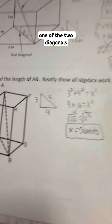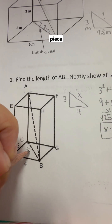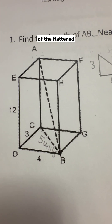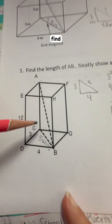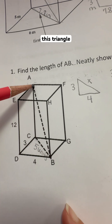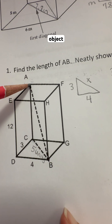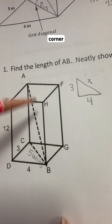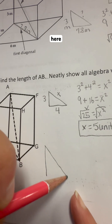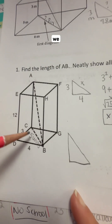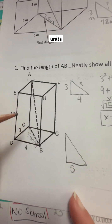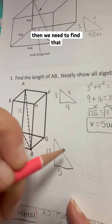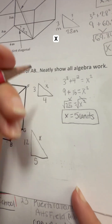That is only one of the two diagonals we have here — that's the flattened piece. Now that we found that as the hypotenuse of the flattened bottom piece, we're going to use it to find what happens in this triangle if I have to go from the back top corner down to the bottom front corner. We now know this bottom is 5 units. The height of this is 12, and then we need to find that missing piece, which we're going to call x.